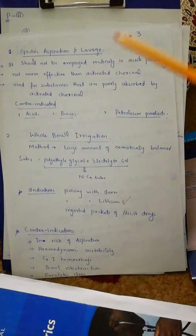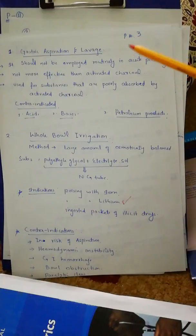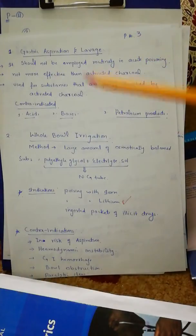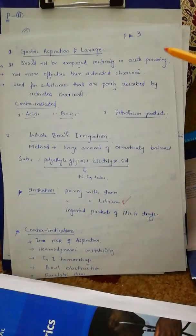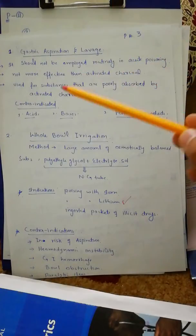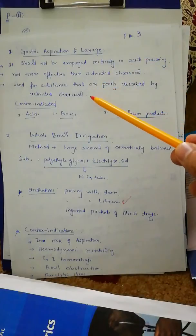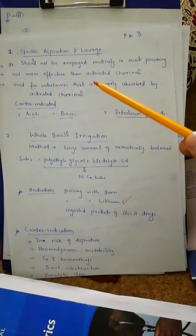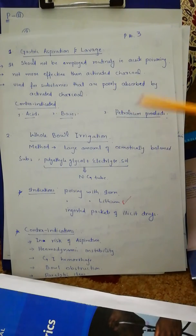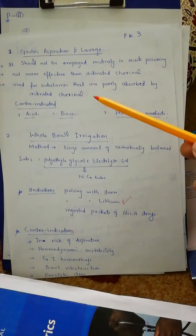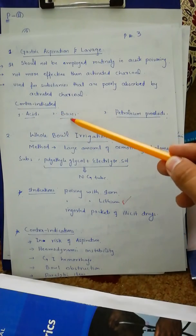The next method is gastric aspiration and lavage, which we also practice in case of poisoning. It should not be employed routinely in acute poisoning. It is not more effective than activated charcoal; it is used for substances that are poorly absorbed by activated charcoal. Gastric aspiration is contraindicated in cases of acids, bases, and petroleum products.